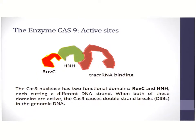The enzyme Cas9 consists of three active sites. The RUVC site binds to the sense strand of DNA, the HNH site binds to the anti-sense strand, and the tracrRNA binding site binds to the tracrRNA.